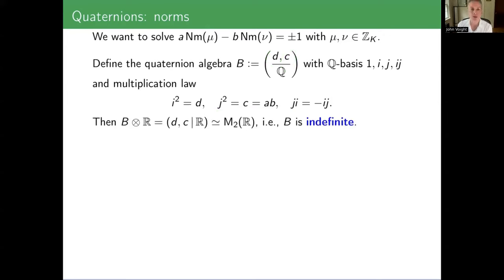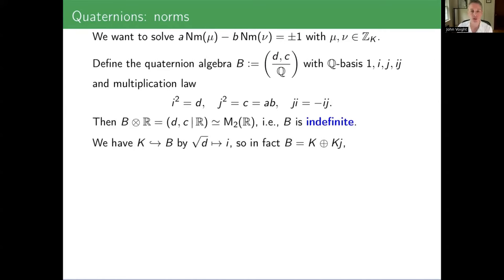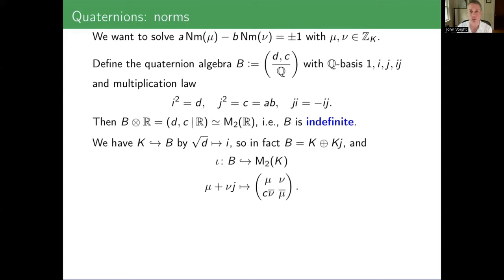D is negative but C is positive. When you replace ℚ by ℝ you get something isomorphic to 2×2 matrices, so B is an indefinite quaternion algebra. This was chosen so that when you look at √D, you get exactly the copy of K, which is ℚ(√D). You could think about B as being a left K-vector space of dimension 2 generated by 1 and J — the i's kind of come pairwise in both coordinates. If you don't like quaternions, you can think of them as 2×2 matrices. This is how they realize themselves, via the right regular representation.